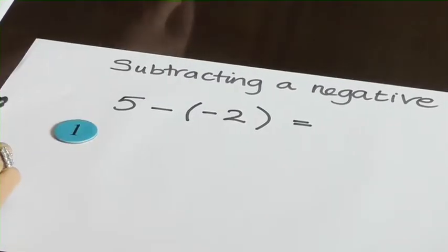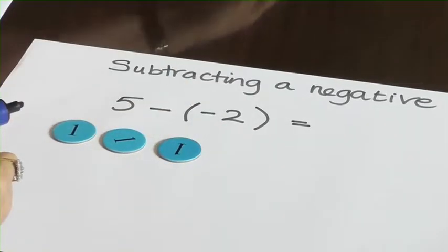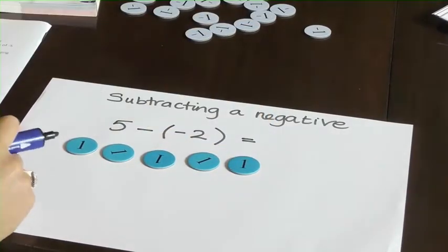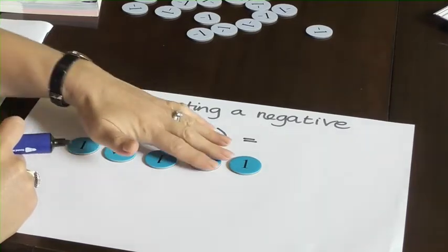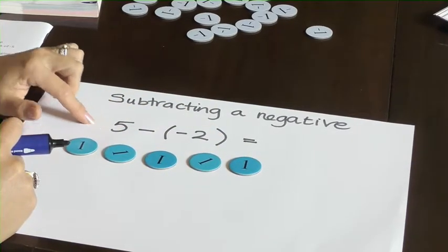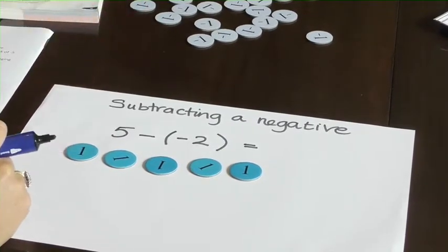So we've got 1, 2, 3, 4, 5 and those 5 represent the 5 here, and historically we just don't have that positive sign in front of the integer.